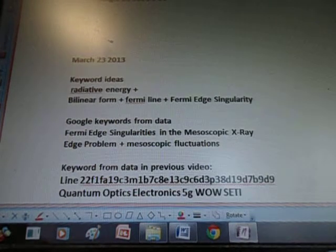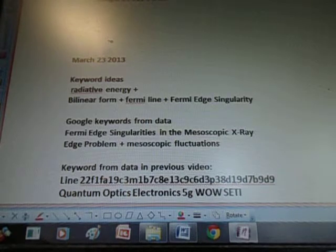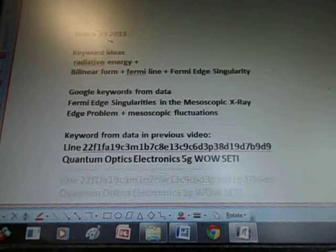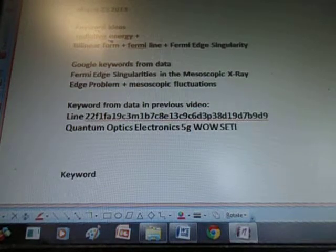March 23rd, 2013. Today is the 27th. Keyword ideas are radiative energy, bilinear form, Fermi line, Fermi edge singularity. Then I looked at mesoscopic x-ray edge problem and mesoscopic fluctuations in this line of data.